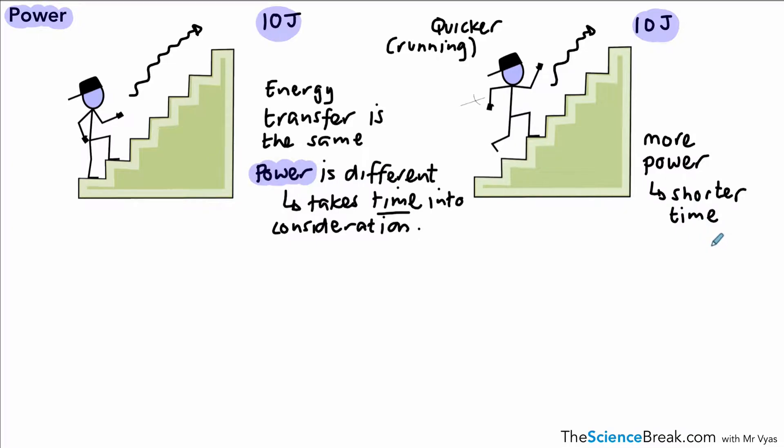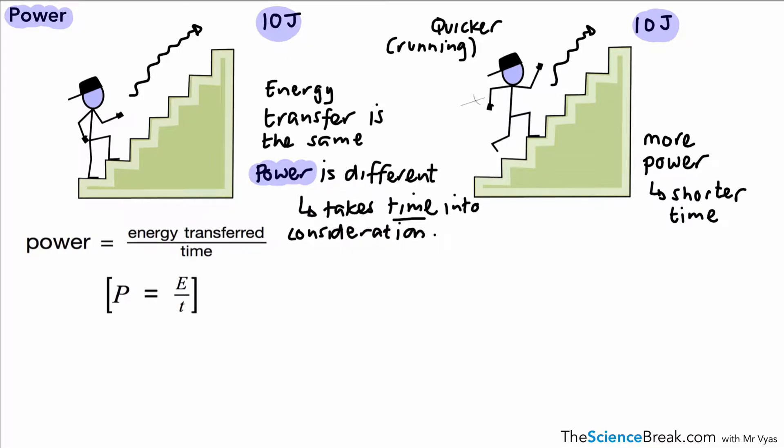Okay, so we should be able to calculate power using an equation. In fact, there are two equations that you need to know when we're talking about power. The power is the energy transferred divided by the time. The energy transferred is measured in joules. Time is in seconds, so anytime you do calculations using this equation, the time must be in seconds. The power is joules per second, but there is a different name we use for that: watts. So watts means joules per second, and it's the unit for power.